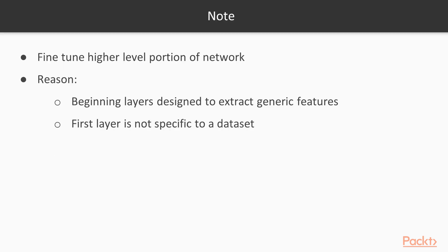Note that we only fine-tune the higher-level portion of the network. This is because the beginning layers are designed to extract more generic features — in general, the first layers of a convolutional neural network are not specific to any particular dataset.